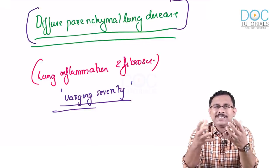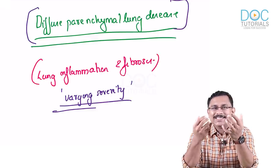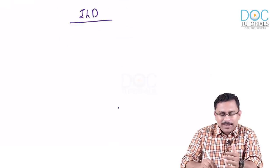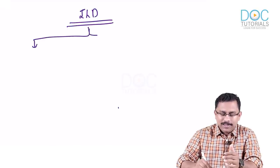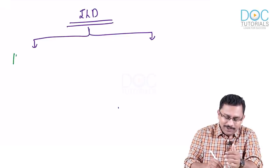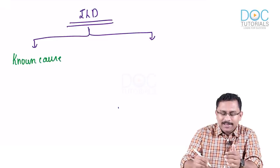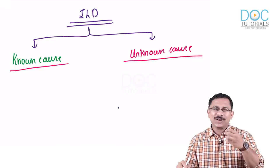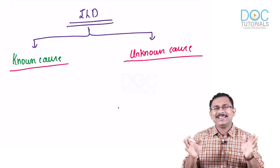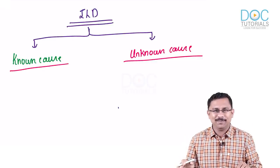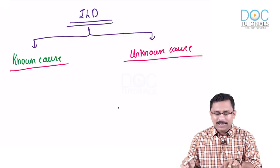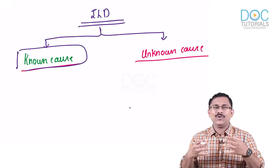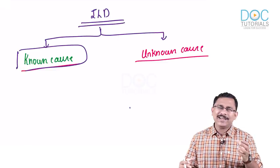Now let's see why ILD results. In the classification of interstitial lung diseases, you can generally classify ILDs into two groups: ILDs which result from known causes — where you have a definite cause — and ILDs where the cause is unknown. In ILDs due to known causes, you will have different inciting factors, including environmental and genetic contributions.